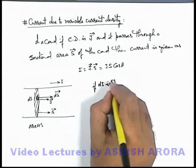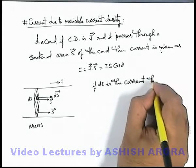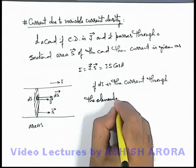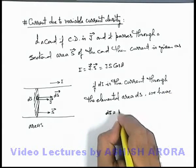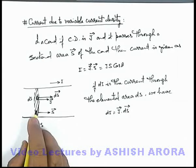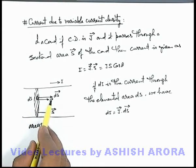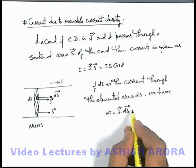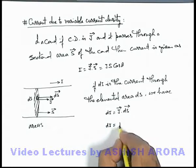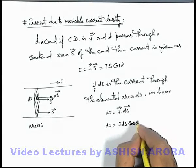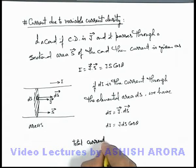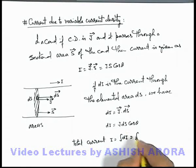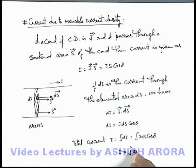If dI is the current through the elemental area dS, we have dI = J dot dS. In the situation shown here, the direction of current density vector and area vector are the same, so we can ignore the dot product because it'll be J dS cos 0. So here dI becomes J dS, or precisely J dS cos theta. Total current in this situation we can write as I = integration of dI, which will be integration of J dS cos theta. In general cases, you can find out the current using the expression I = integration of J dot dS, whenever current density is varying in the cross section.